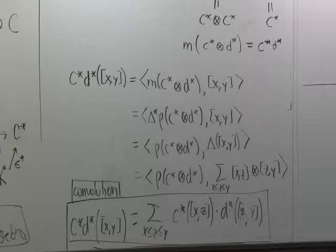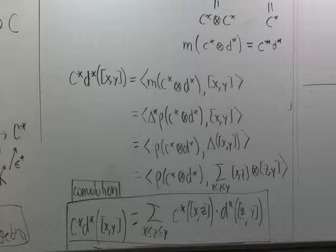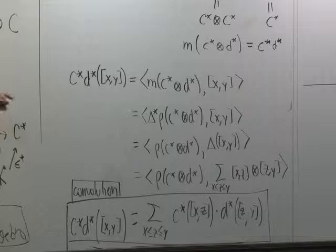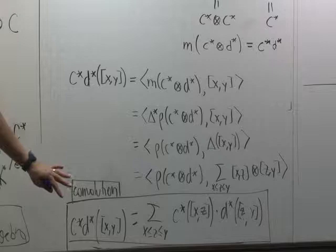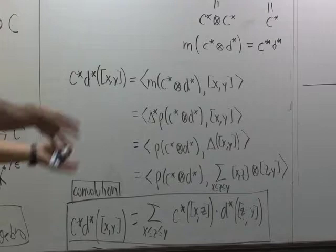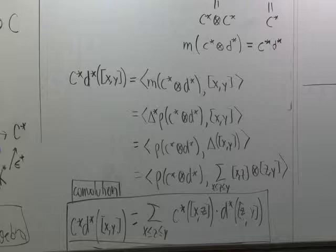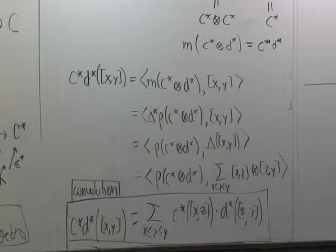The theory of Möbius functions comes out very naturally from this point of view. You might know Möbius functions from combinatorics or from number theory — we're talking about the same thing. This is one very natural way to arrive at the concept of a Möbius function in number theory as well.